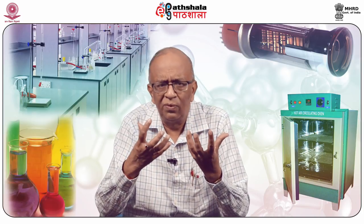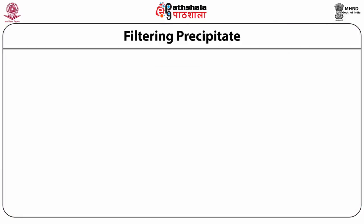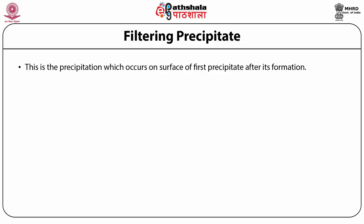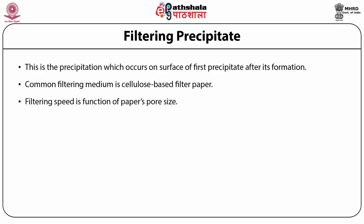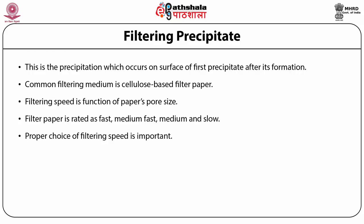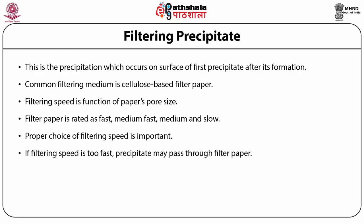After digestion, when crystals of sufficient size have formed, filtration is done. After precipitation and digestion are complete, the precipitate is separated from solution by filtration using either filter paper or a filtering crucible. The most common filtering medium is cellulose-based filter paper, classified according to its filtering speed, size, and ash content on ignition. Filtering speed is a function of pore size, which determines the particle size retained. Filter paper is rated as fast, medium-fast, medium, and slow.